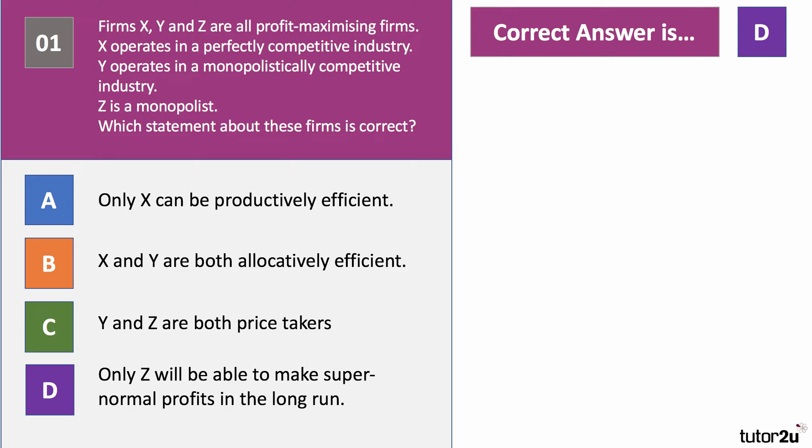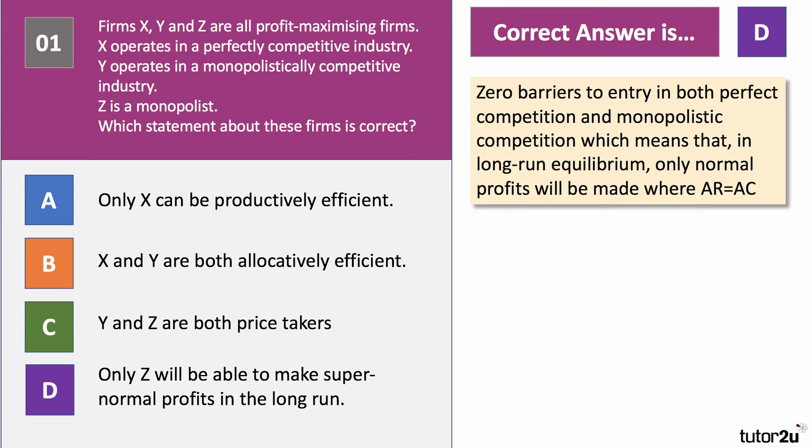Only Z will be able to make supernormal profits in the long run. X can be productively efficient in perfect competition, and with monopoly you can get big scale economies. Y is not going to be productively efficient — it's priced above marginal cost in monopolistic competition. Z is not a price taker, nor is Y, because they can both set the price. Zero entry barriers in both perfect competition and monopolistic competition means that in the long run, only normal profits will be made. New firms and new products will compete the profits away.